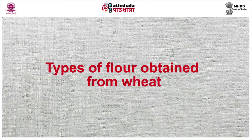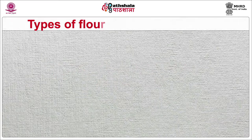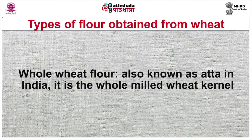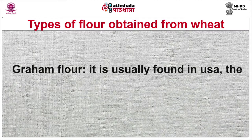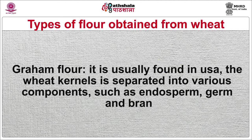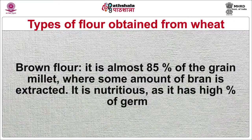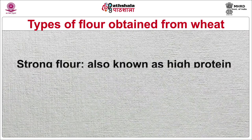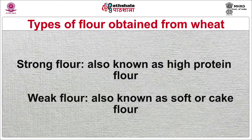Now we will discuss the different types of flour obtained from wheat. The first one is whole wheat flour, also known as atta in India — it is the whole milled wheat kernel. Gram flour is usually found in the USA, where the wheat kernel is separated into various components such as endosperm, germ and bran. Brown flour is almost 85% of the grain milled where some amount of bran is extracted — it is nutritious as it has a high percentage of germ. Strong flour is also known as high protein flour. Weak flour is also known as soft or cake flour.